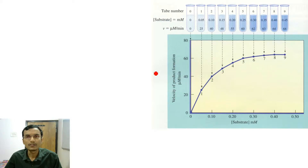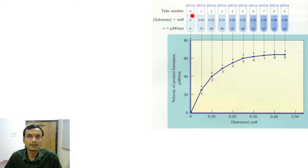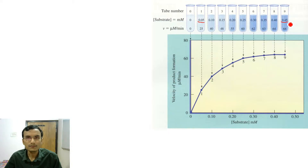By this experiment I will teach you how we can determine the Vmax and Km of a particular enzyme. Ten test tubes (numbered 0 to 9) are taken. In all test tubes the enzyme concentration is the same, and pH and temperature are also the same. What differs is the substrate concentration.